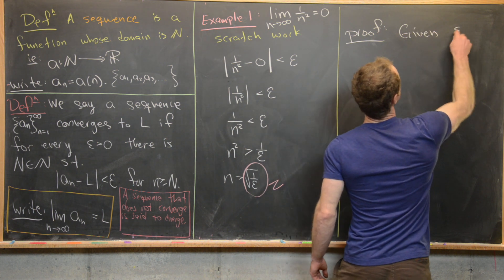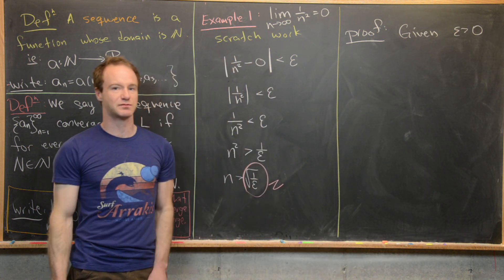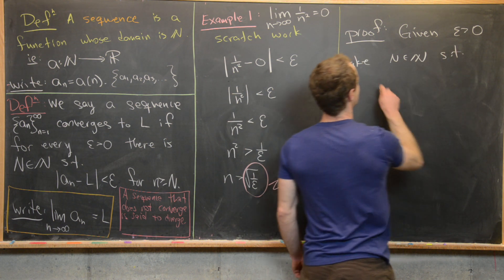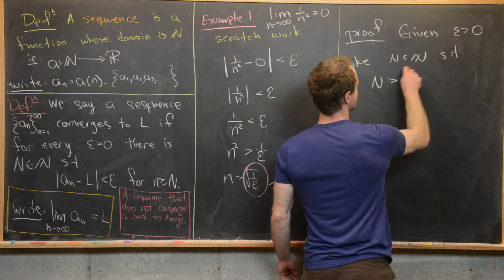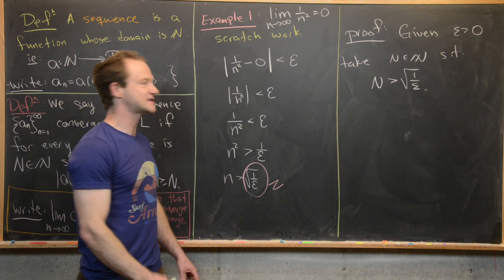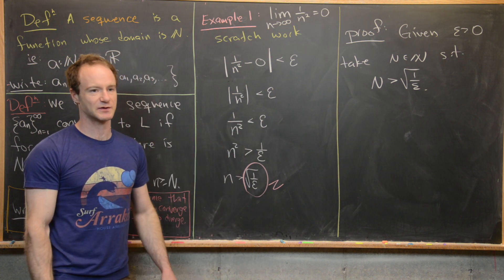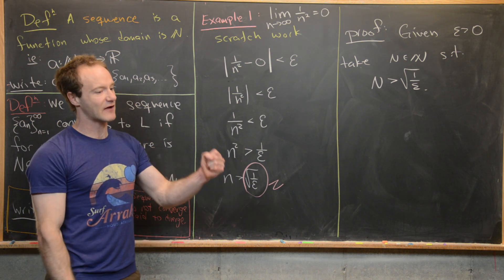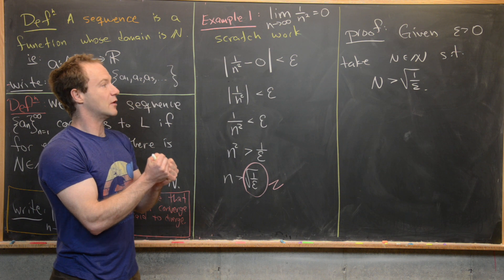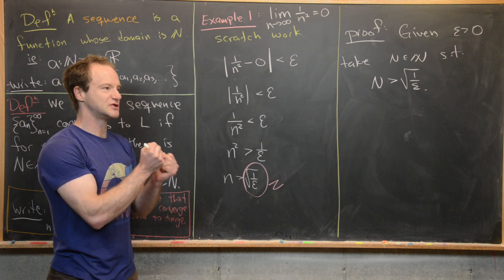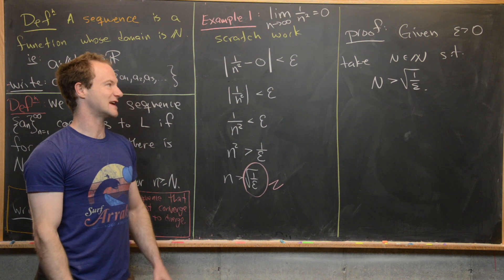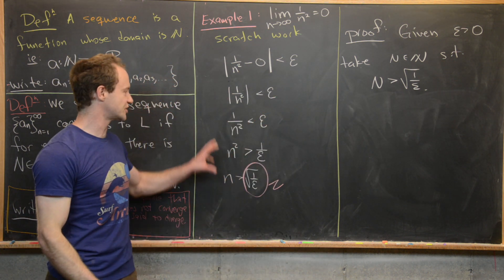Now for the formal proof: given any epsilon greater than 0, we take a natural number N such that N is greater than the square root of 1/epsilon. This is motivated by the scratch work and is possible by the Archimedean principle, which states that for every real number there is a natural number bigger than it. Since epsilon is greater than 0, the quantity 1/epsilon is a positive real number, so its square root is also a positive real number, and we can find a natural number bigger than it — that's our N.